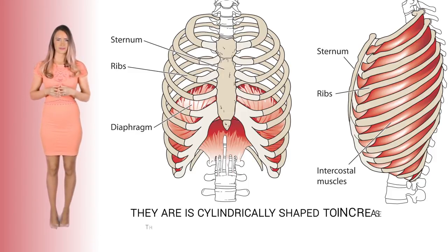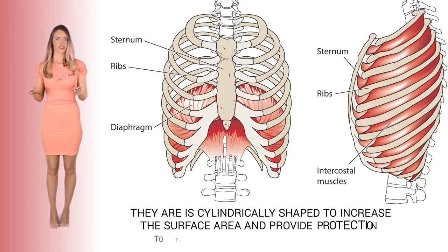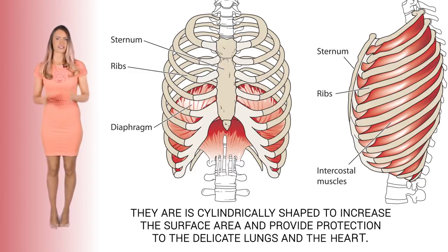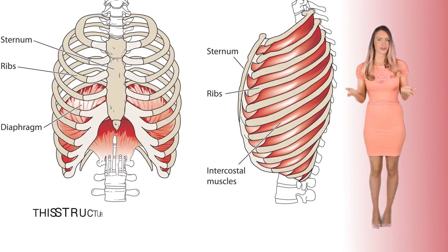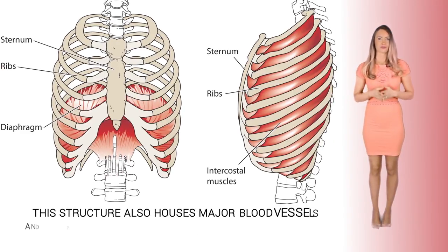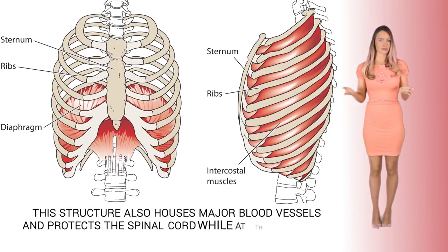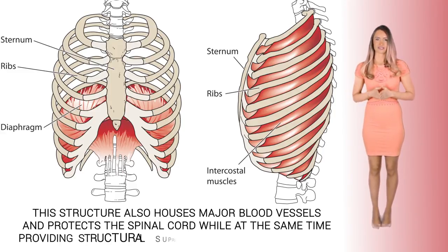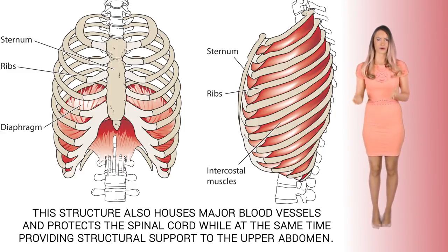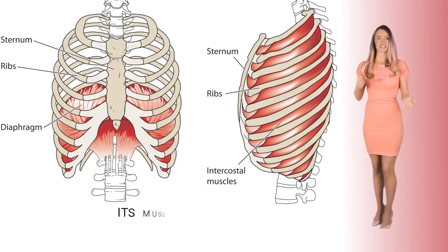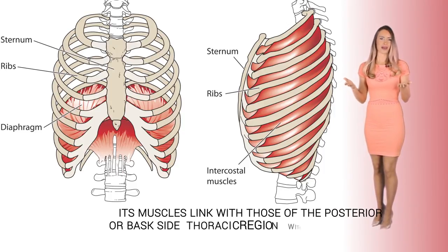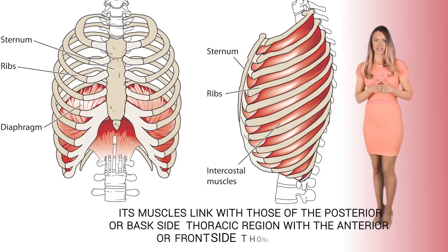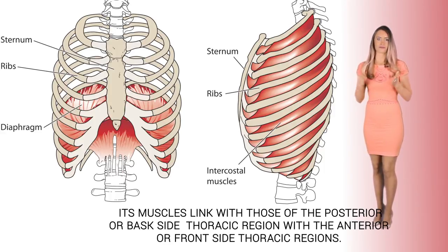The ribs are cylindrically shaped to increase surface area and provide protection to the delicate lungs and heart. This structure also houses major blood vessels and protects the spinal cord, while at the same time providing structural support to the upper abdomen. Its muscles link with those of the posterior or back side thoracic region with the anterior or front side thoracic region.